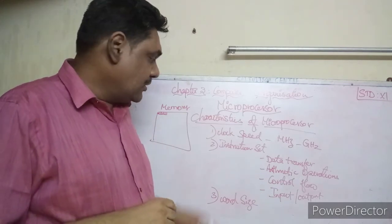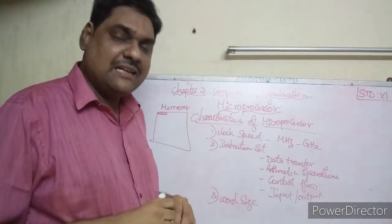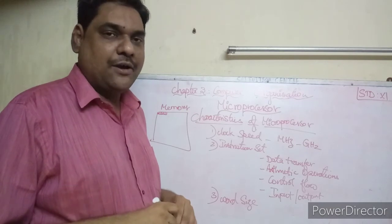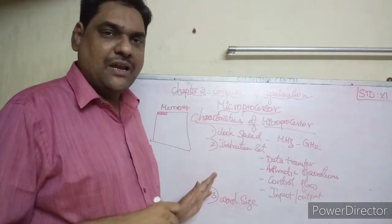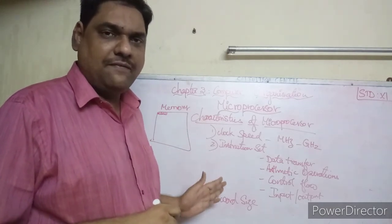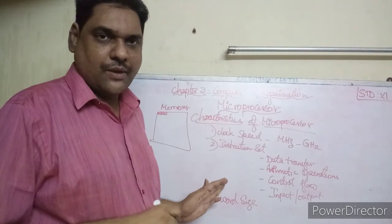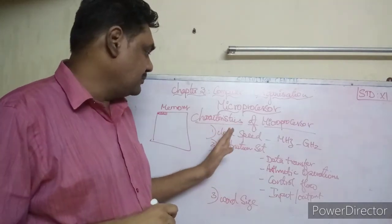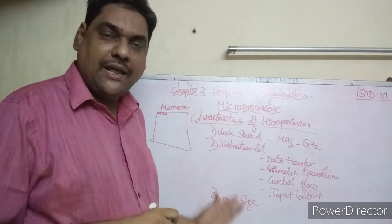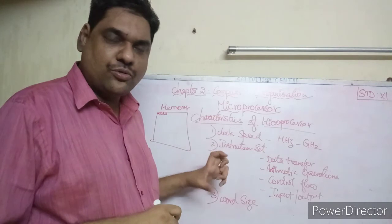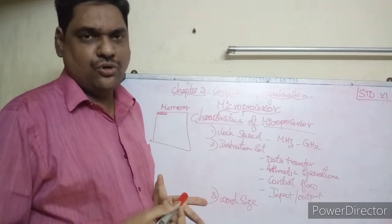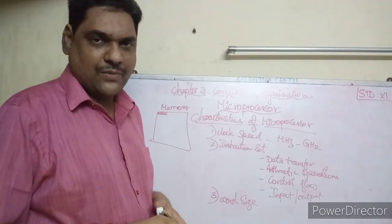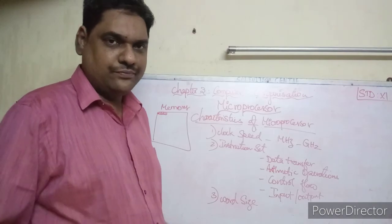These are the characteristics of the microprocessor, which is a very important five-mark question. Just write the three headings and explain each in two to three lines, and you will get five marks. Thank you, children.